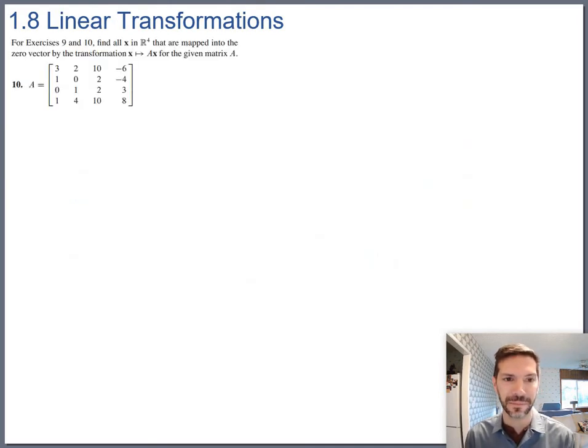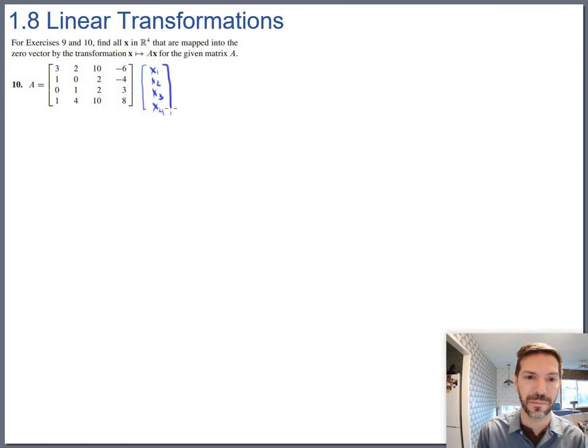Let's look at problem 10. For exercises 9 and 10, find all x in R4, so they happen to tell you what the domain is, that are mapped onto the zero vector by the transformation. And here they use a different notation for the transformation, but they're still talking about the same thing, multiplying A times x. So they want some vector here. We've got 1, 2, 3, 4 columns to combine and they want to produce the zero vector.